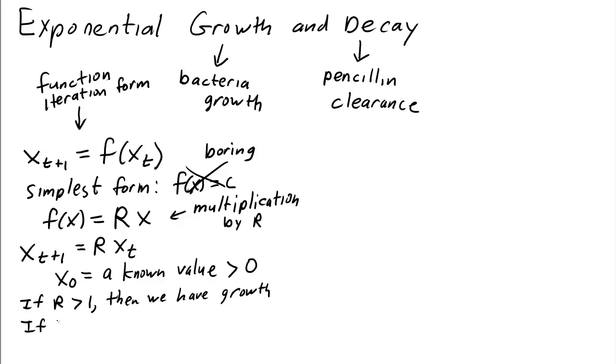What about if R is between 0 and 1? Then we're multiplying x_t by a number less than 1, and so x_{t+1} will be smaller than x_t. So we have decay. The solution to this dynamical system is simply that x_t is R to the t times the initial condition x_0. It will be exponential growth if R is greater than 1 or exponential decay if R is between 0 and 1.